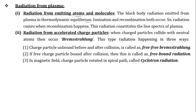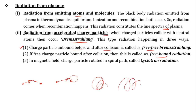Radiation from isolated charged particles involves bremsstrahlung, with three types: free-free radiation (charge particle unbound before and after collision), free-bound radiation (particle is free before collision but bound after), and cyclotron radiation (charged particle moves in a spiral path in a magnetic field). These three types of radiation occur in plasma due to acceleration of charged particles.